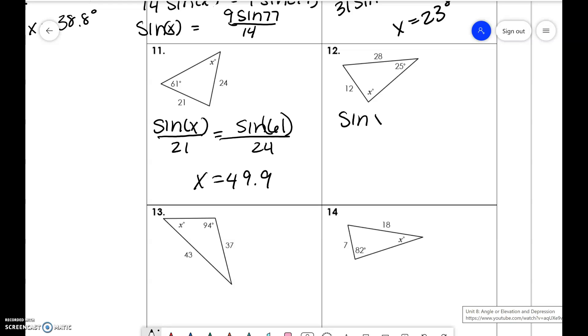Sine of x over 28 is equal to sine of 23 over 12. So 28 sine of 25 divided by 12, take sine inverse of it, and you get x to be 80.4.